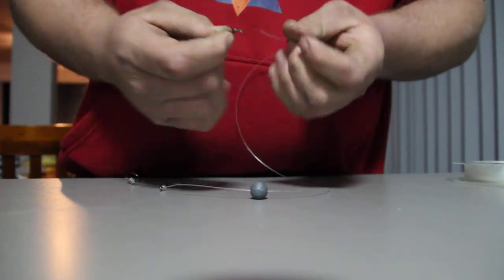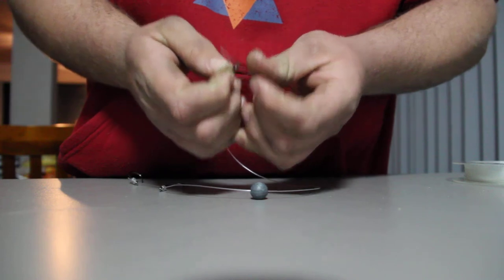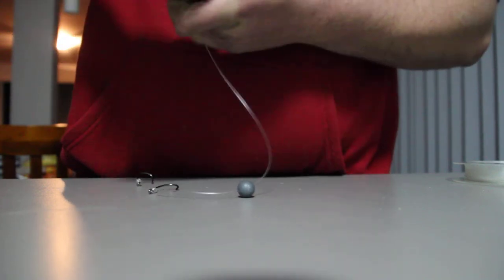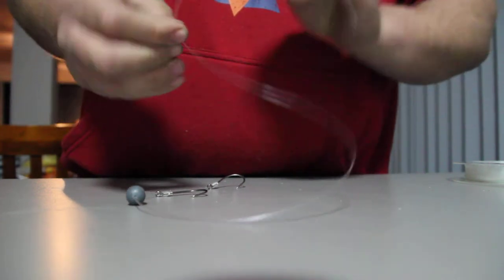Small swivel. It's a tie—a simple blood knot—straight through the eye of the swivel, back over on itself like so.